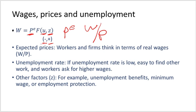Similarly, in bargaining between workers and firms, nominal wages are typically set for a year at the beginning of the year. If price levels rise unexpectedly during the year, nominal wages are typically not readjusted. So if workers expect the price of goods to double, they will ask for a doubling of their nominal wages at the start of the year. Likewise, if firms expect the price of goods they sell to double, they will be willing to double nominal wages.